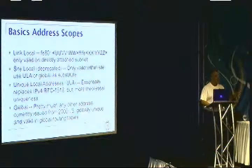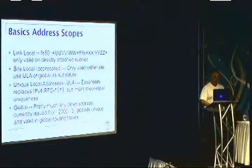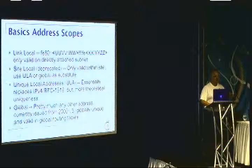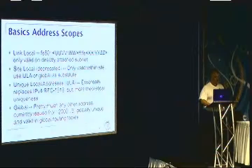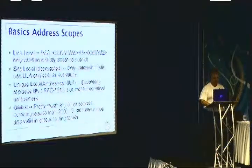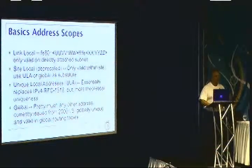There's another sort of pseudo-scope known as unique local addresses — essentially the IPv6 equivalent of RFC 1918 private addresses. They're really not necessary in IPv6 and don't really serve a purpose, but some people with a lot of IPv4 background thought they needed them, so they managed to get it through the IETF. And then of course we have global, which is again what you're used to working with in IPv4.